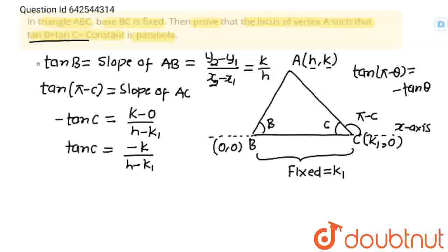Now, I am going to put value of tan B and tan C in the given condition of position that tan B plus tan C is constant. So, this will be tan B which will be k upon h. Plus tan C which is minus k upon h minus k1 is equals to constant. And constant are not variable. Constant means fixed. Like k1 is fixed. This is also constant.